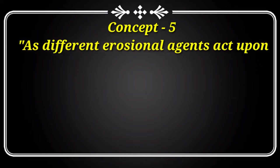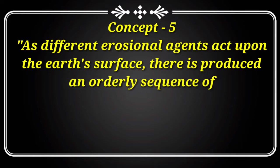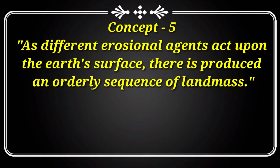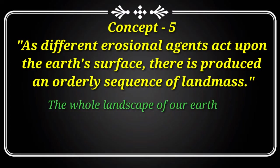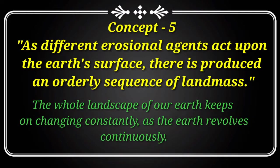The fifth concept: as different erosional agents act upon the earth's surface, there is produced an orderly sequence of landforms. Various geomorphologists believe that different landforms are formed in an orderly and sequential manner. The use of the term 'geomorphic cycle' cannot be ignored completely. The whole landscape of our earth keeps on changing constantly as the earth evolves continuously, and landscapes also change their shapes and directions.